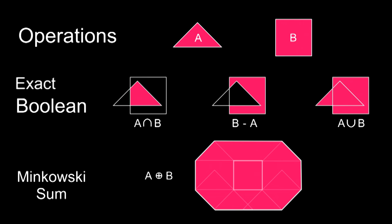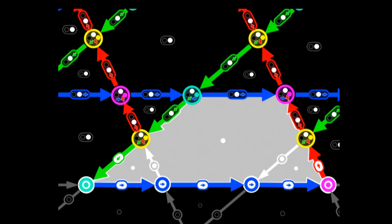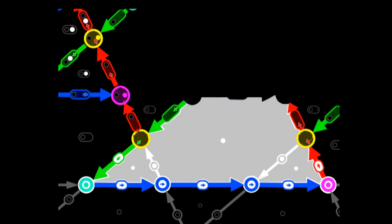The problem is, we need exact Boolean operations and exact Minkowski sums. An approximate solution is not going to cut it. This is because of the propagation step. Any errors that we have are going to propagate. They're going to grow and grow and grow and just get worse and worse until the whole thing breaks.